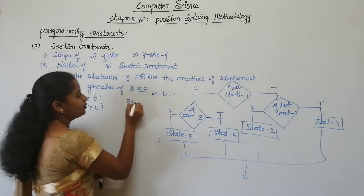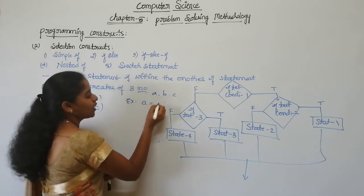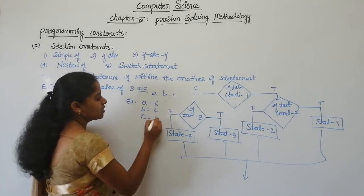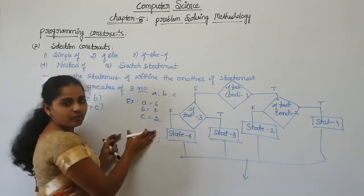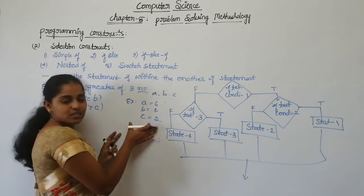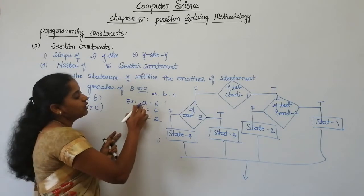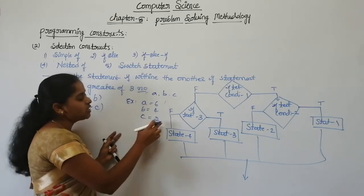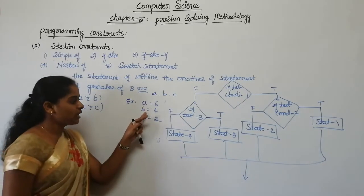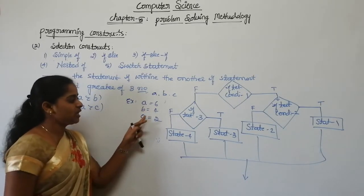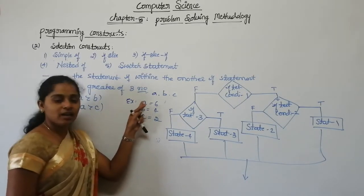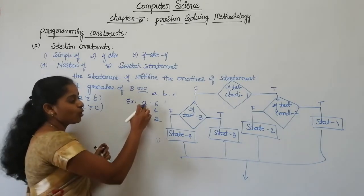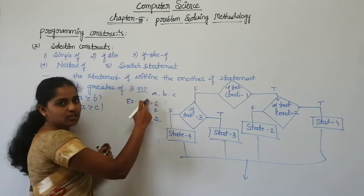Let us take an example: the value of a is 6, the value of b is 4, and the value of c is 2. So here a is greater than b, and a is also greater than c.